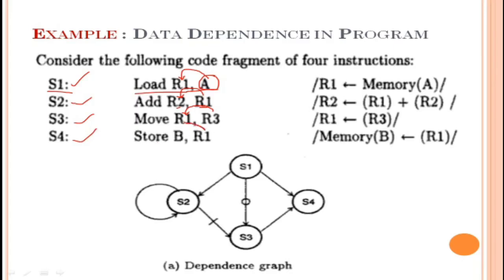Statement 3 moves the content of R3, and Statement 4 stores the R1 value onto memory location B. Whatever value is stored in R1 is moved to the memory location B. In this example, S2 is flow dependent on S1 because memory location A is passed via register R1.